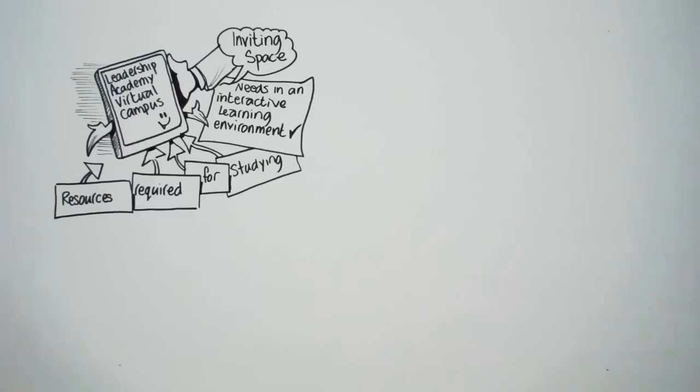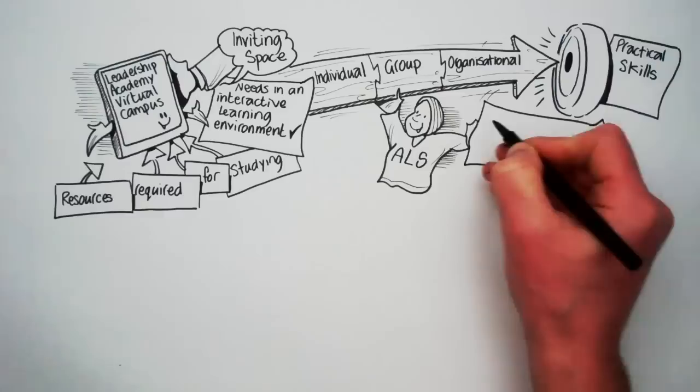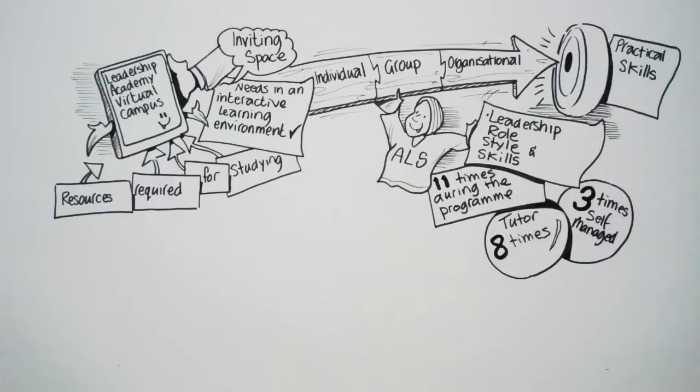The Action Learning Set provides a forum to explore the links between individual, group and organisational dynamics in order to equip you with practical skills to craft your leadership role, styles and skills. The Action Learning Set meets 11 times during the programme, full-day working sessions, facilitated by a tutor eight times and the remaining three times self-managed by the set.